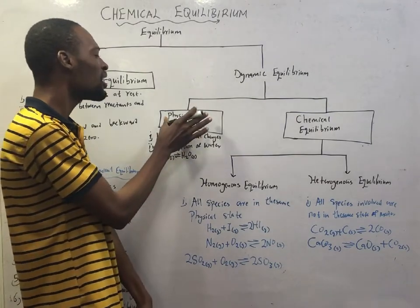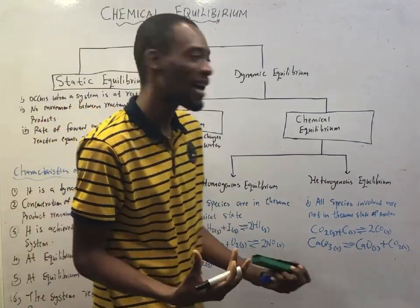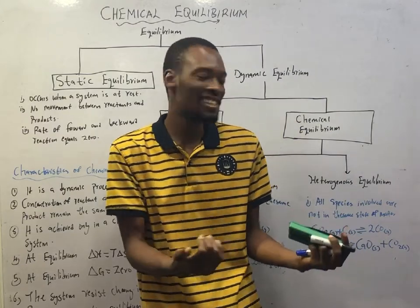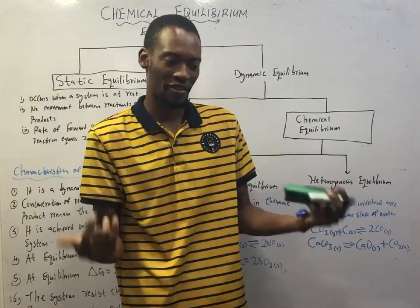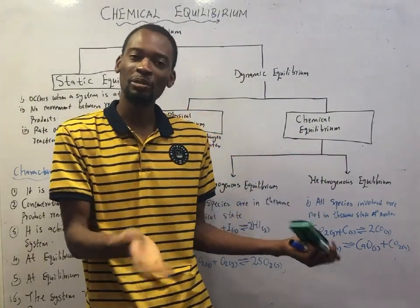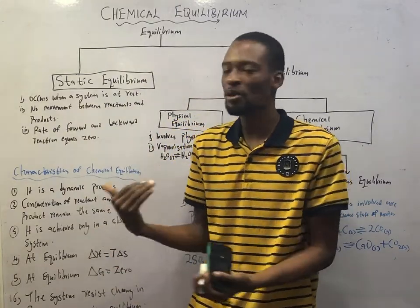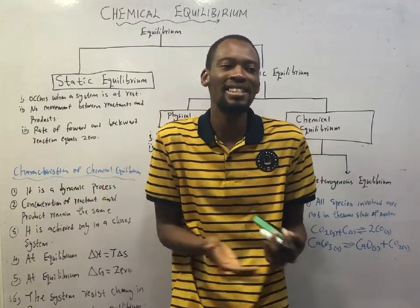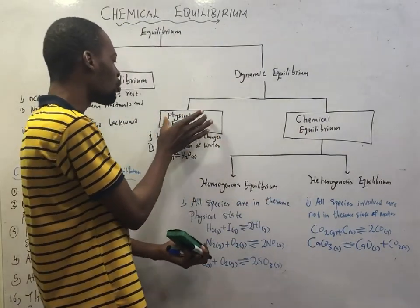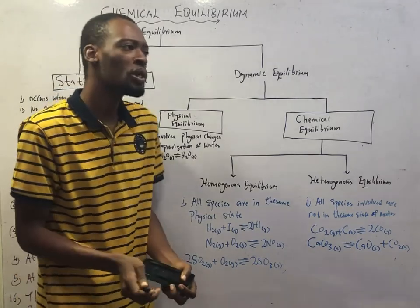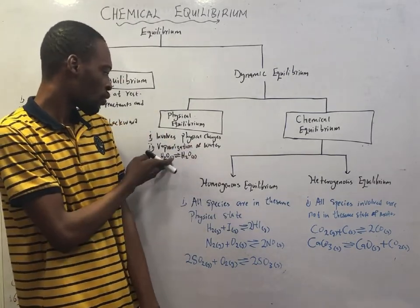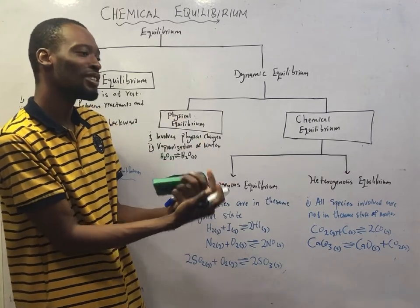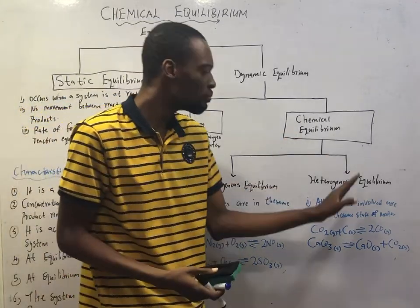Dynamic equilibrium can be divided into physical equilibrium and chemical equilibrium. Physical equilibrium involves only physical changes — changes in which no new substances are formed. An example of physical equilibrium is the vaporization of water: water moves from liquid to gas and back to liquid, maintaining equilibrium when the forward rate equals the backward rate. Chemical equilibrium is our focus.